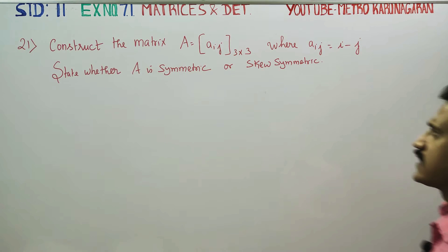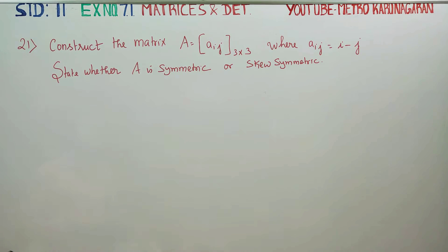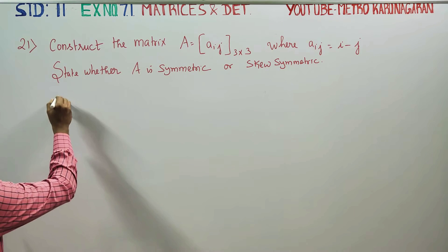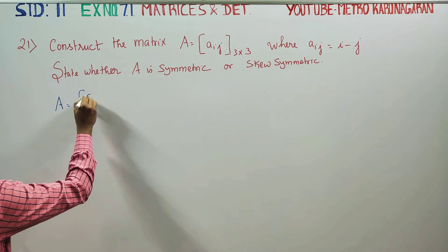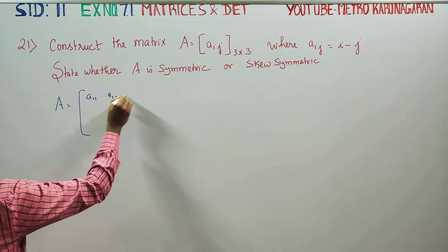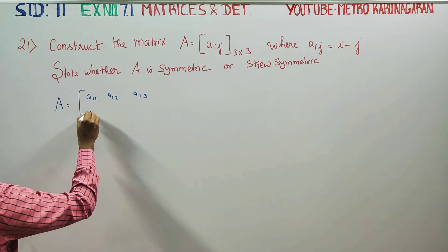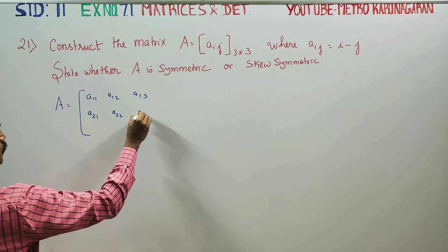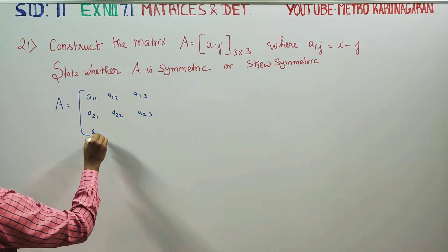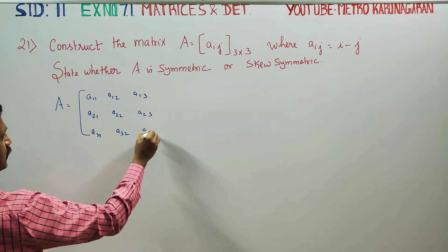First of all, we will construct a 3x3 matrix. The elements are: A11, A12, A13, A21, A22, A23, A31, A32, A33.